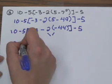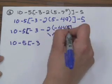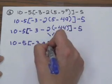I'm just bringing everything down so I don't leave anything out. Negative 2 times negative 44 is positive 88.